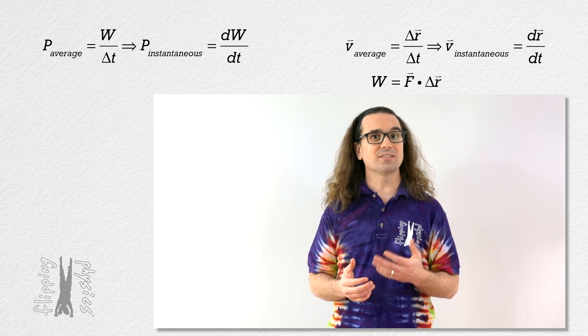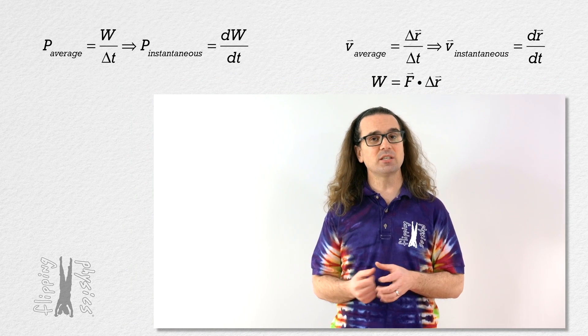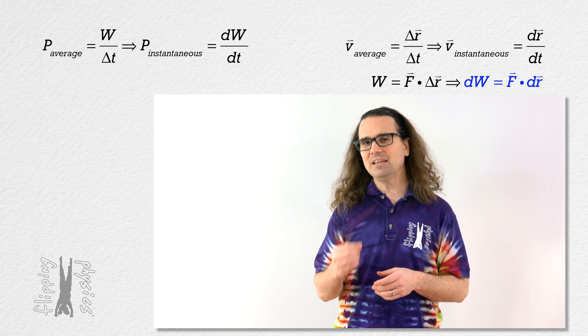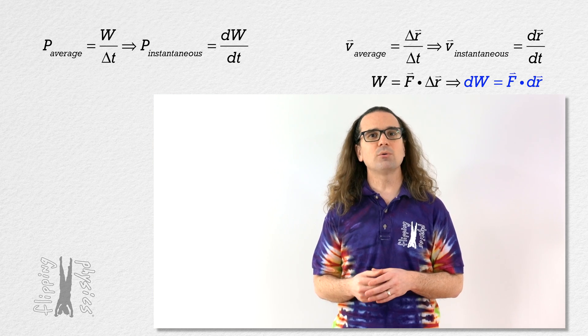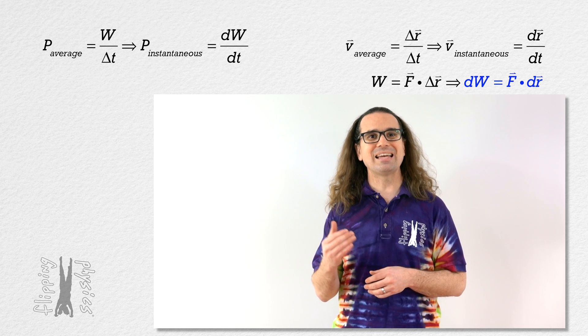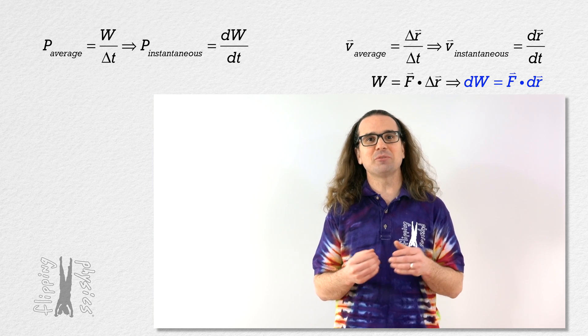Now, we also know that work is the dot product of force and displacement. That means an infinitesimally small amount of work, dW, equals the dot product of force and an infinitesimally small change in position, dr.